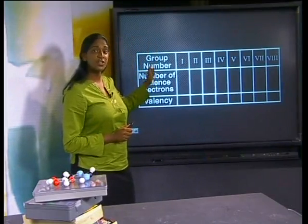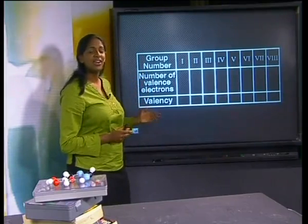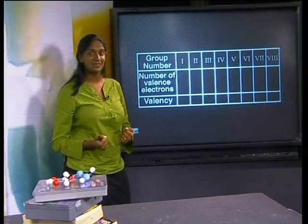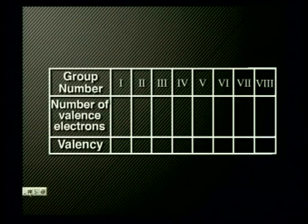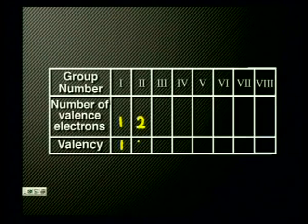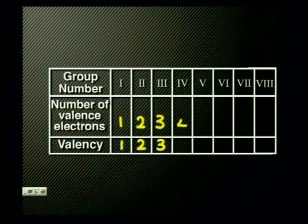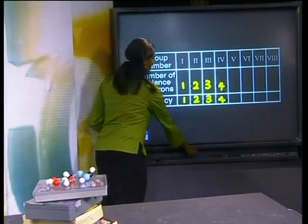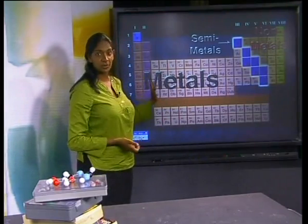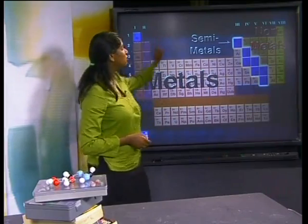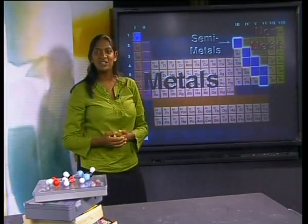Let's put all of this information together in a table to look for a pattern. The group number of the elements is written in the first row, and the number of valence electrons and the valency are in the next rows. The group number tells us the number of valence electrons. Group 1 elements have 1 valence electron and a valency of 1. Group 2 has 2 valence electrons and a valency of 2. Group 3 has 3 valence electrons and a valency of 3. Group 4 has 4 valence electrons and a valency of 4. The metals on the left-hand side of the periodic table have valence electron counts of only 1, 2, and 3, so they normally give away their valence electrons to form positively charged ions.